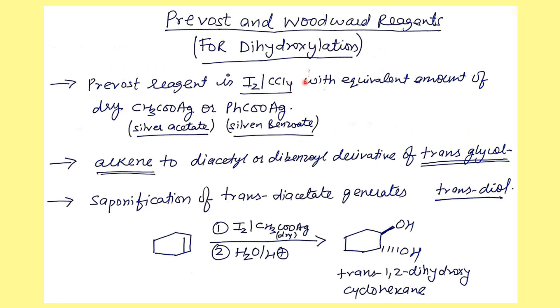It is basically iodine dissolved in CCl4, and to this we add an equivalent amount of dry silver acetate or silver benzoate. Remember this condition: whenever we are doing Prevost dihydroxylation, the conditions are always dry, meaning anhydrous, free of moisture. There should not be any moisture in the media. The most important conditions are iodine, silver acetate or silver benzoate, and dry conditions.